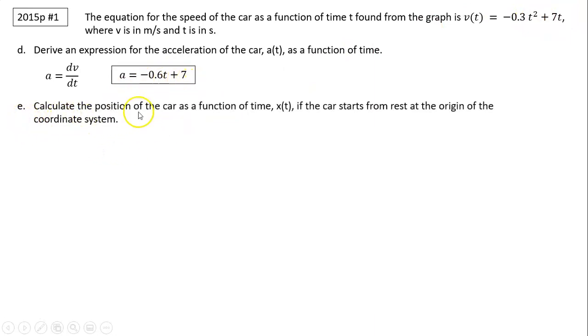Part E: Calculate the position of the car as a function of time, given v(t) equals negative 0.3t squared plus 7t. Assuming the car starts from rest at the origin of the coordinate system, so x0 equals 0. From this equation we know delta x equals the integral from 0 to t of v dt. This delta means x at t minus x at 0.